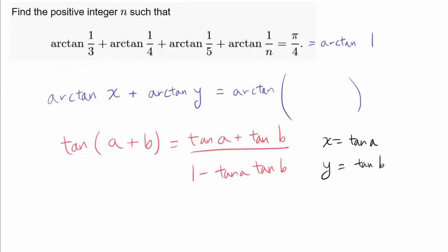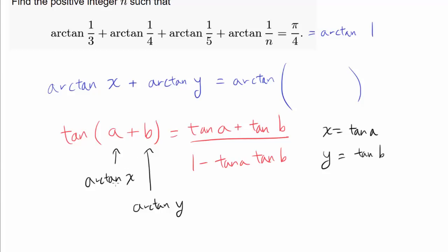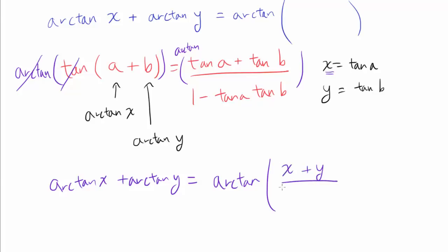If we let x = tan(a) and y = tan(b), then a = arctan(x) and b = arctan(y). So we have an equation involving arctan(x) + arctan(y). Taking arctan of both sides cancels tangent and arctangent, giving us: arctan(x) + arctan(y) = arctan((x + y) / (1 − xy)). We now have an equation to sum arctangents.